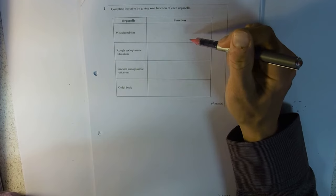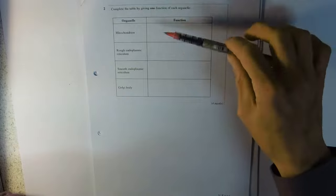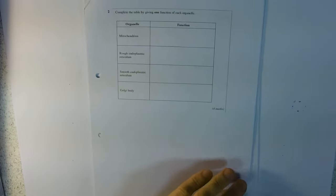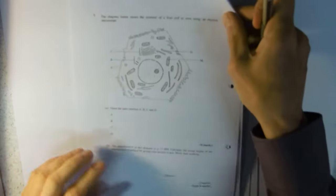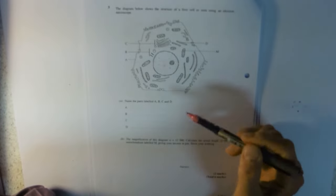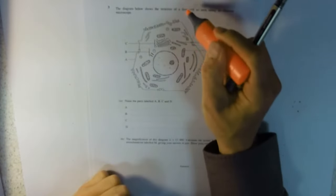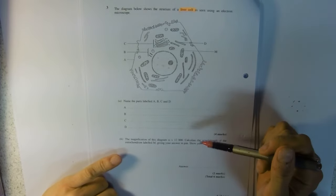Functions of organelles - pretty straightforward. You can't say things like making energy for mitochondria, you need to be a bit more specific. Just stuff from your notes really. Labeling parts: common errors for A is calling it a cell wall when it's a liver cell, so it won't have a cell wall - it's an animal cell.